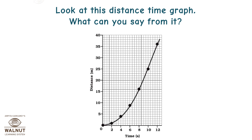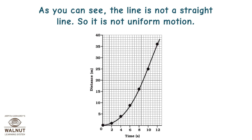Look at this distance-time graph. What can you say from it? As you can see, the line is not a straight line, so it is not uniform motion.